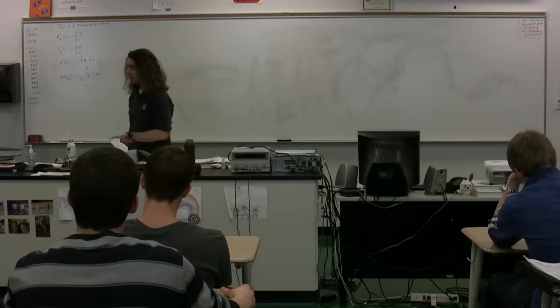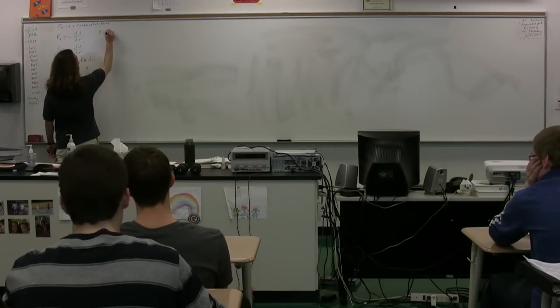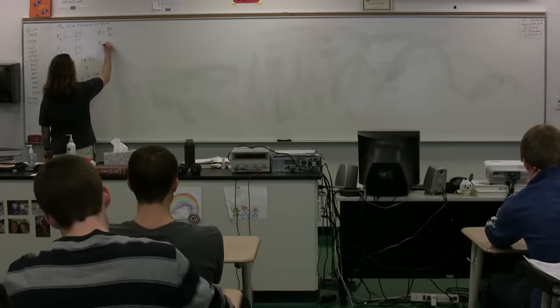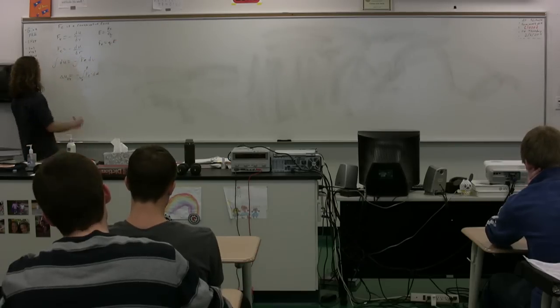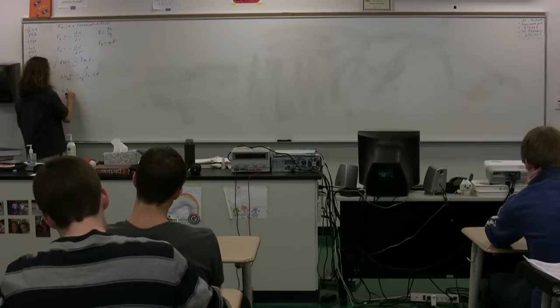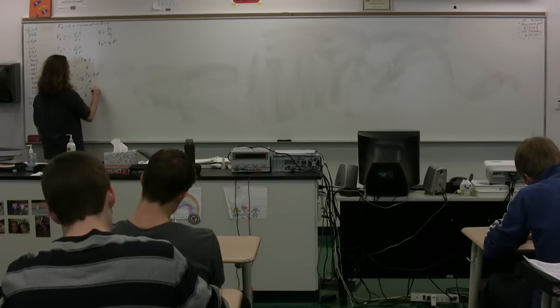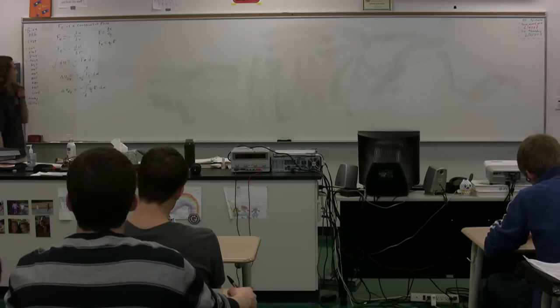And we can also say, we know the electric field is defined as the electric force per unit charge. Therefore, the electric force is equal to q times the electric field. We can substitute in q times E for the electric force. We get the change in electric potential energy equal to the negative of the integral from A to B of q, E, the dot product of ds.